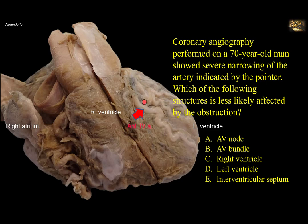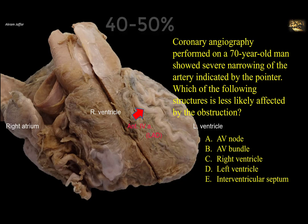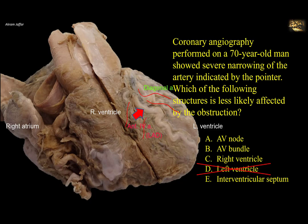The anterior interventricular artery is a branch of the left coronary artery. It is also called left anterior descending or LAD, and it is the most common site of occlusion, about 40-50% of the cases of occlusion of coronary arteries. Left anterior descending gives one or two large diagonal branches, which may arise and descend diagonally across the anterior surface of the left ventricle. So the left ventricle will be affected in obstruction of the left anterior descending. It also supplies small branches to the right ventricle, although it is not the main blood supply of the right ventricle, which is mainly supplied by the right coronary artery.